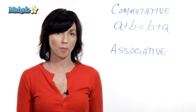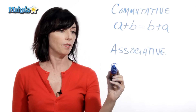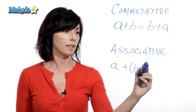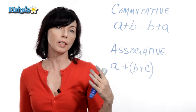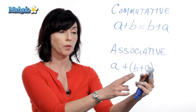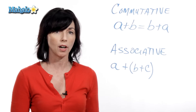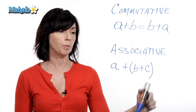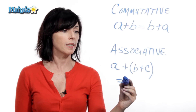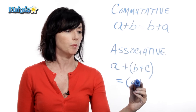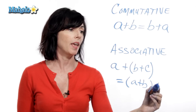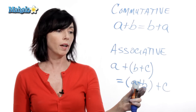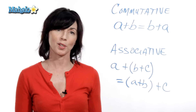Now let's take a look at the associative property. Let's say I have a plus the quantity b plus c. What the associative property says is that it doesn't matter which two of these things I associate together, I'll still get the same answer. So a plus the quantity b plus c would be the same as if I first add a and b and then add c. So it doesn't matter if I associate these two or I associate these two, the answer will be the same.